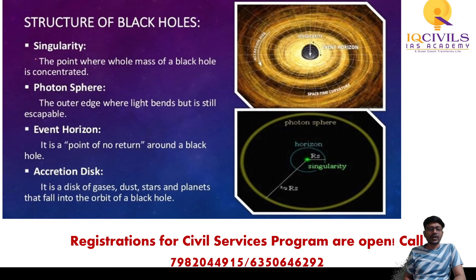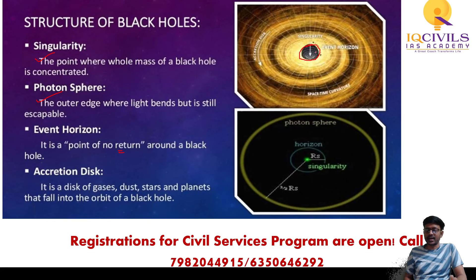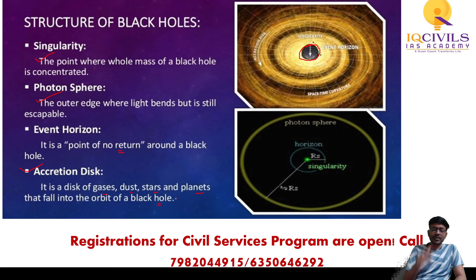From the slide: Singularity is the point where the whole mass of a black hole is concentrated. The photon sphere is the outer edge where light bends but is still escapable. The event horizon is the point of no return — once crossed, nothing can escape from the black hole. The accretion disk is a disk of gases, dust, stars, and planets that fall into the orbit of a black hole.